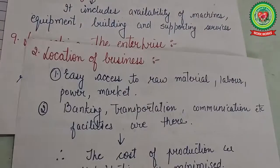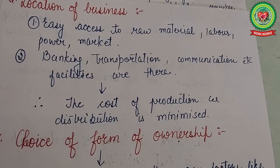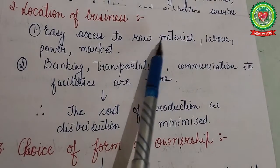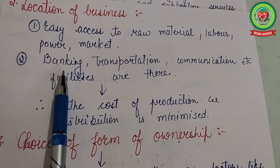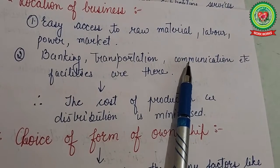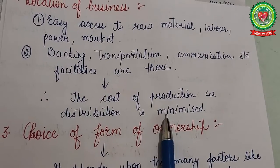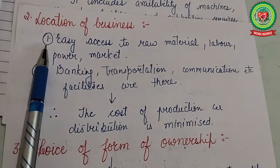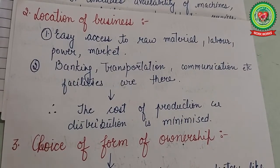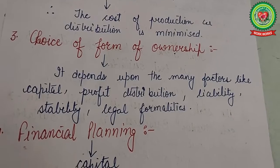The next factor is location of business. The location of a business enterprise is an important task. The location should provide easy access to raw materials, labor, and the market, and offer facilities like banking, transportation, communication, and warehousing, so that the cost of production and distribution is minimized.